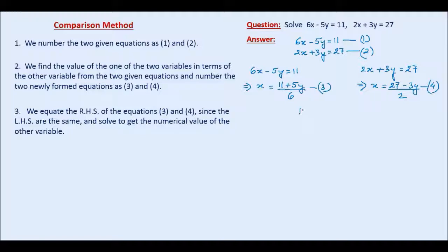Therefore, first of all, let us write the right hand side of equation number three. And this is equated to the right hand side of equation number four. And on cross multiplication, we get 2 times 11 plus 5y equal to 6 times 27 minus 3y.